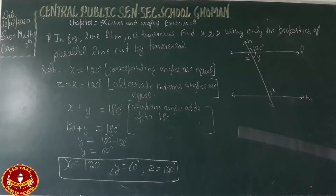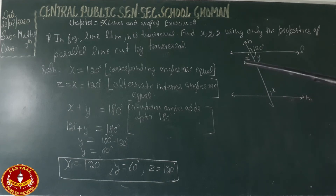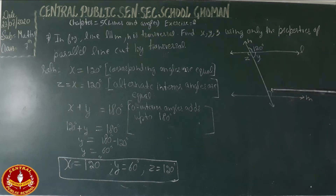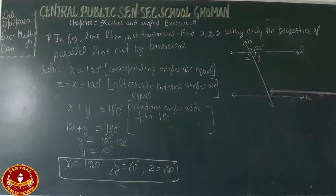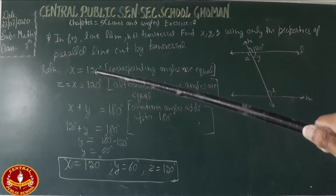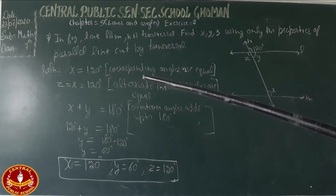Looking at the angles, the given angle on line A is 120 degrees. Since we have two parallel lines cut by the transversal, 120 degrees is equal to x. This is a corresponding angle. Therefore, x is equal to 120 degrees because corresponding angles are equal.